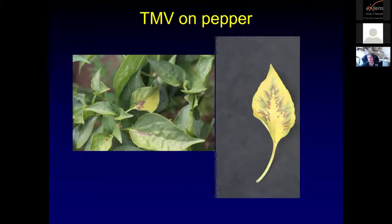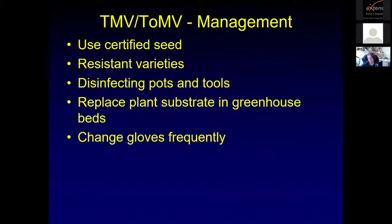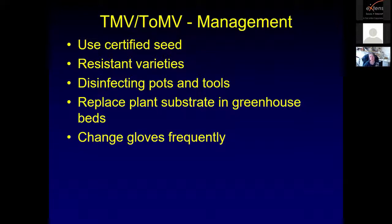On peppers, you usually don't see symptoms on the fruit, but you get this oak leaf pattern on the leaves. It can cause yield loss even if you don't see symptoms on the fruit — you may notice 20 to 30 percent less yield. To manage tobacco mosaic or tomato mosaic virus, use certified disease-free seed, use resistant tomato varieties (all of which are hybrids; there are no resistant heirloom varieties), disinfect pots and tools, replace plant substrate in greenhouse beds as old roots carry the virus, and change gloves frequently.